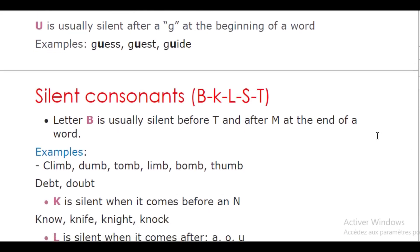Now let's see the silent consonants: B, K, L, S, and T. Starting with the consonant B. The letter B is usually silent before a T and after an N at the end of a word. Examples: climb, limb, thumb. Here the B comes after an N.